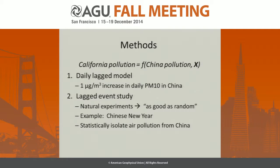A second approach we use is a lagged event study. If we think about the optimal way to measure this statistically, it would be a randomized control trial. Obviously randomizing pollution in China that's transferred to the U.S. is not logistically or ethically feasible. In the social sciences and more recently in public health, studies have appealed to natural or quasi-experiments where treatment is assigned outside the experiment and not by the researcher — so we can consider it as good as random. A good example is Chinese New Year, a major week-long holiday when many industries and businesses shut down. It celebrates Lunar New Year, which differs from our traditional calendar year. Some years Chinese New Year occurs in late January or early February, making its timing unlikely to be correlated with factors that affect pollution trends in California — which is one way to statistically distinguish air pollution in China from other factors affecting air quality in California.